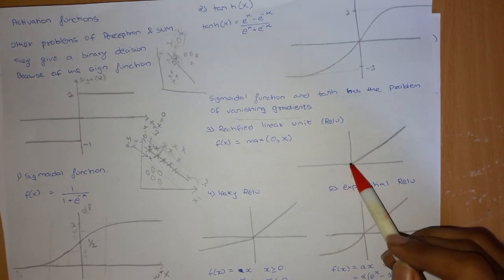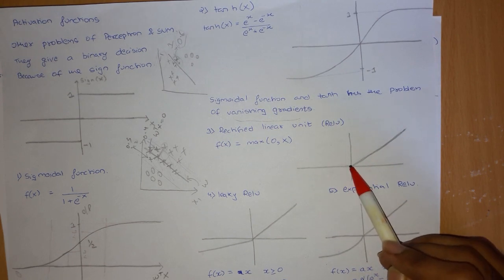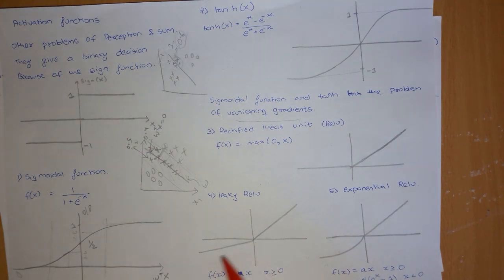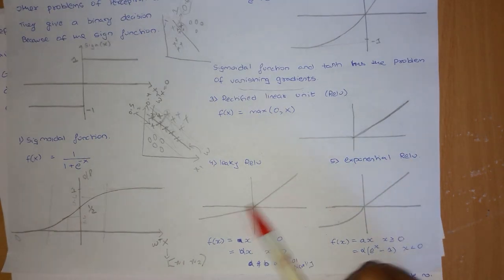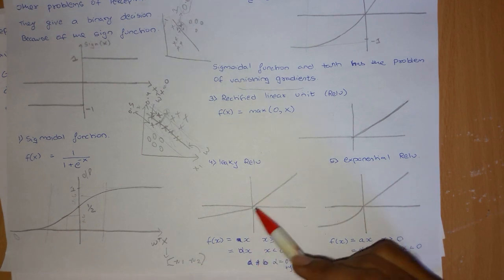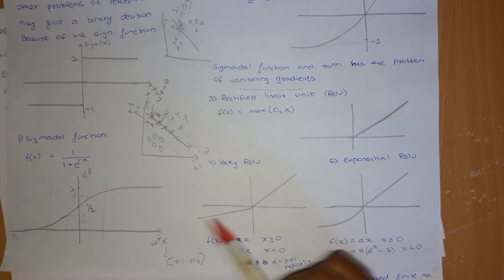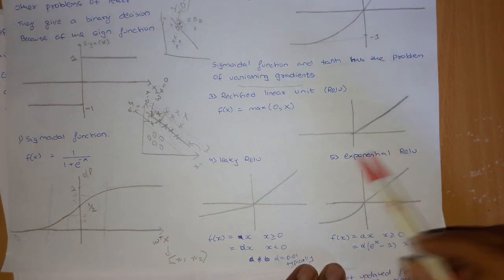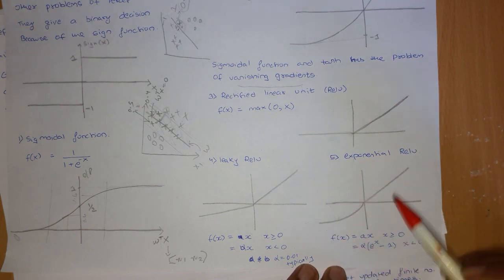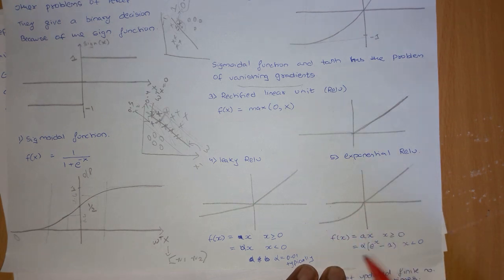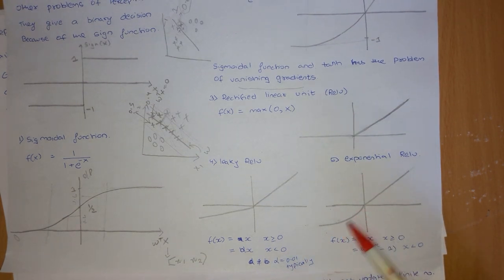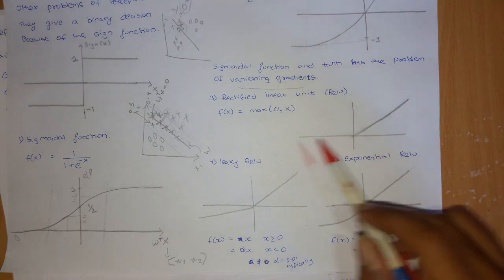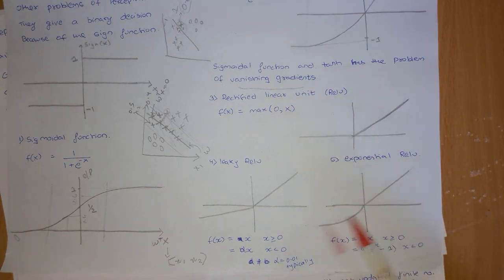One issue is that negative values just become zero in ReLU. So instead, we can use Leaky ReLU, which defines two lines with different slopes: x for positive values and alpha*x (where alpha is a very small value like 0.01) for negative values. There is also Exponential ReLU, which uses an exponential function for the negative side, allowing it to take meaningful negative values.